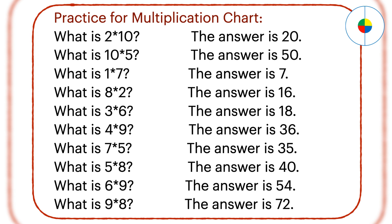Any number times 1 is the easiest calculation. What is 8 times 2? Any number multiplied by 2, just add the same number. 8 times 2 is 8 plus 8 equals 16. The answer is 16.